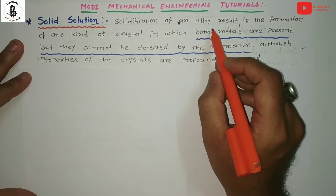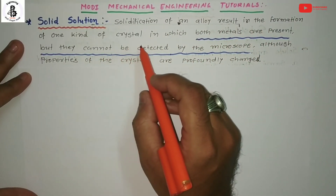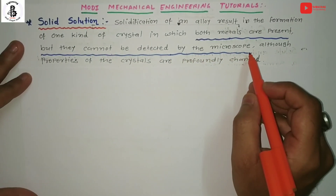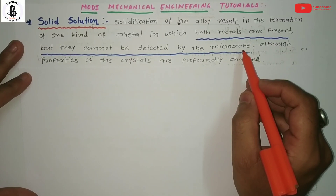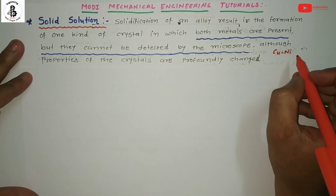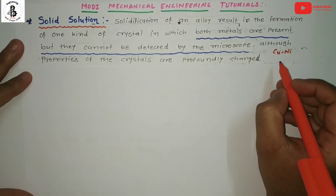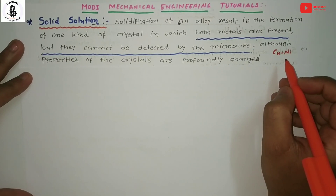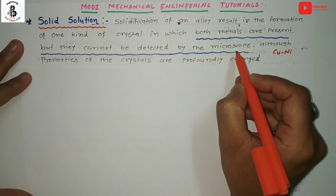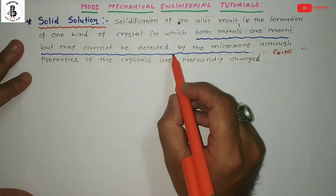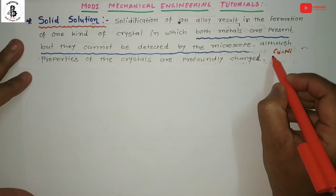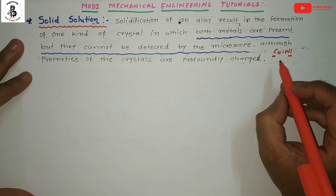Solidification of an alloy results in the formation of one kind of crystal in which both metals are present but they cannot be detected by microscope. In such situations, both metals have a hundred percent solubility — like copper and nickel. You can add copper and nickel in any proportion from 10% to 90% and they form a single solid material. Although the properties of the crystals are profoundly changed.